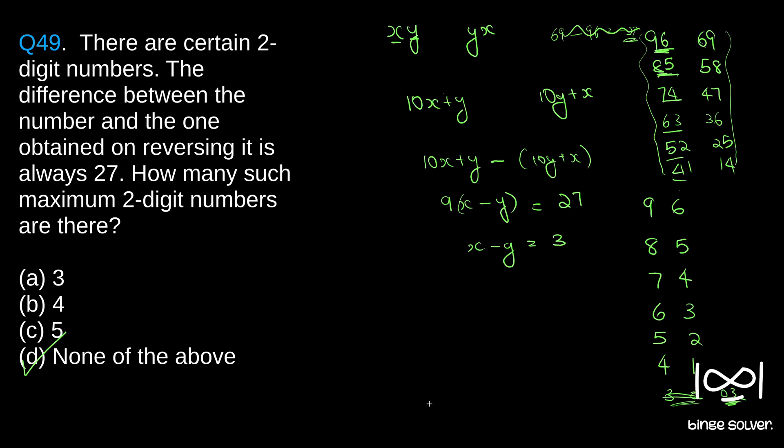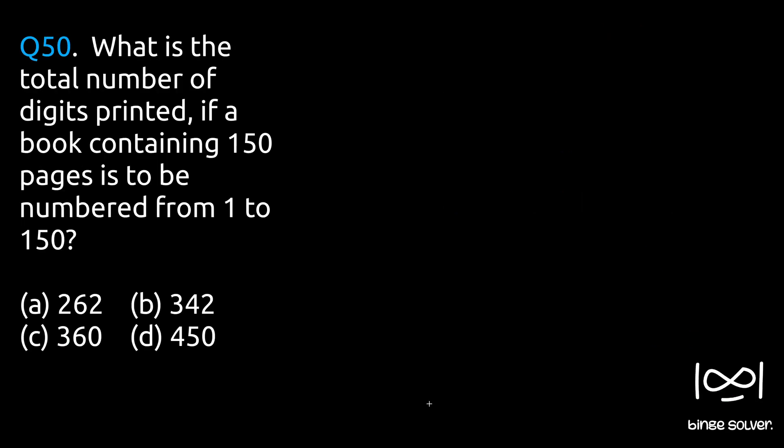Next question, Question 50: What is the total number of digits printed if a book containing 150 pages is to be numbered from 1 to 150?